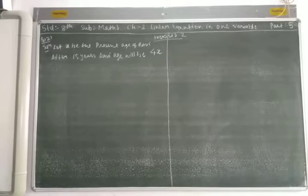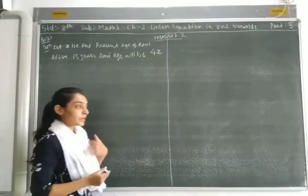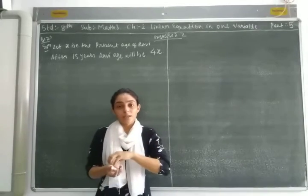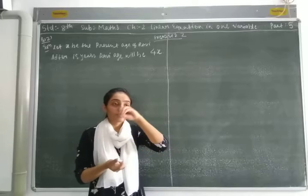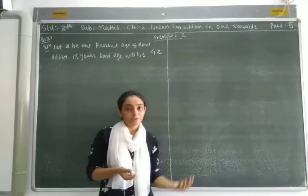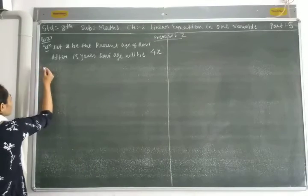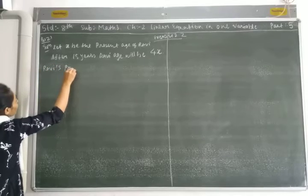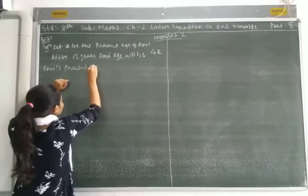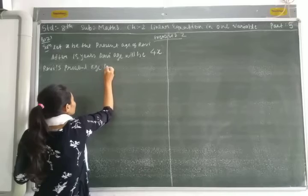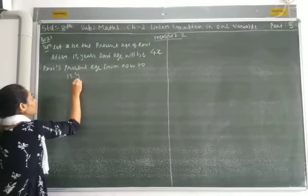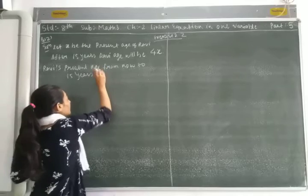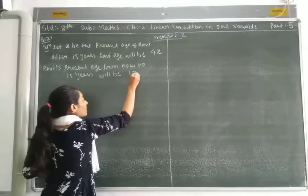We have to find Ravi's present age. Ravi's present age is x. From now, after 15 years, we have to add 15 to the current age. So Ravi's age after 15 years will be x plus 15.